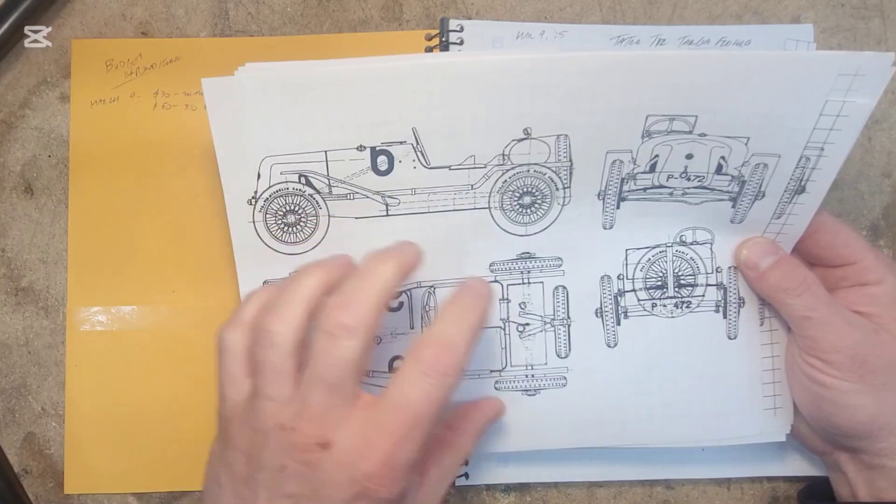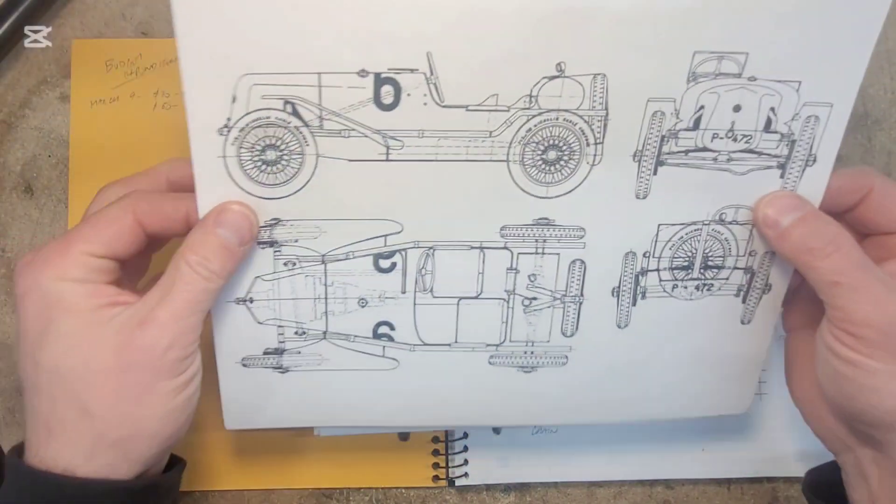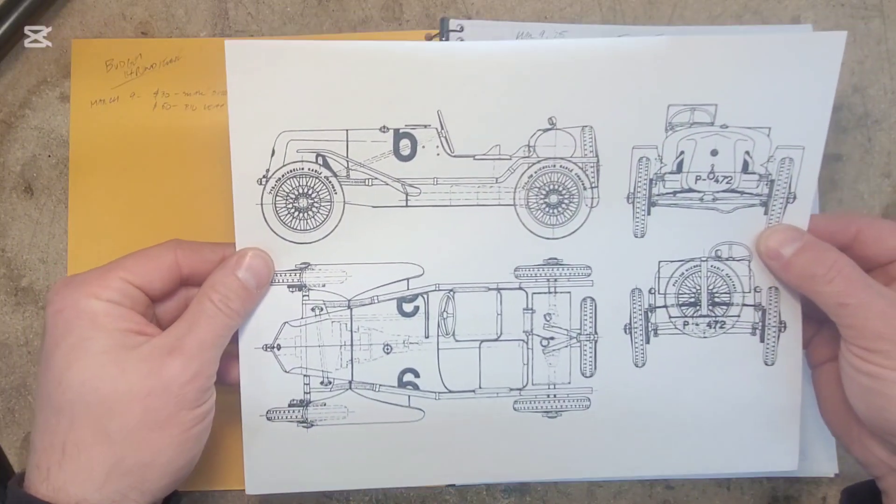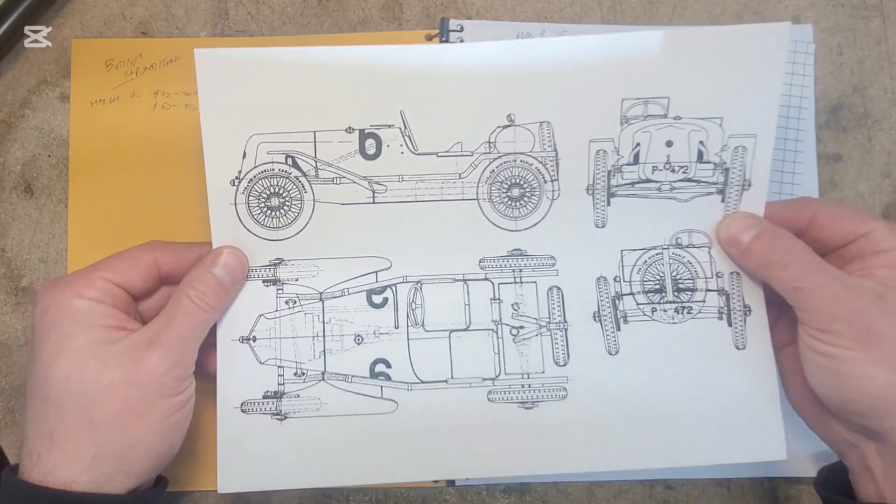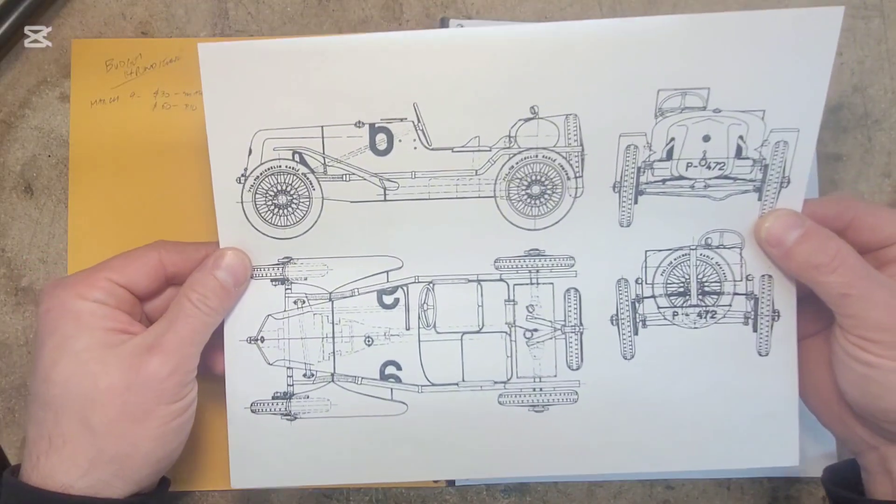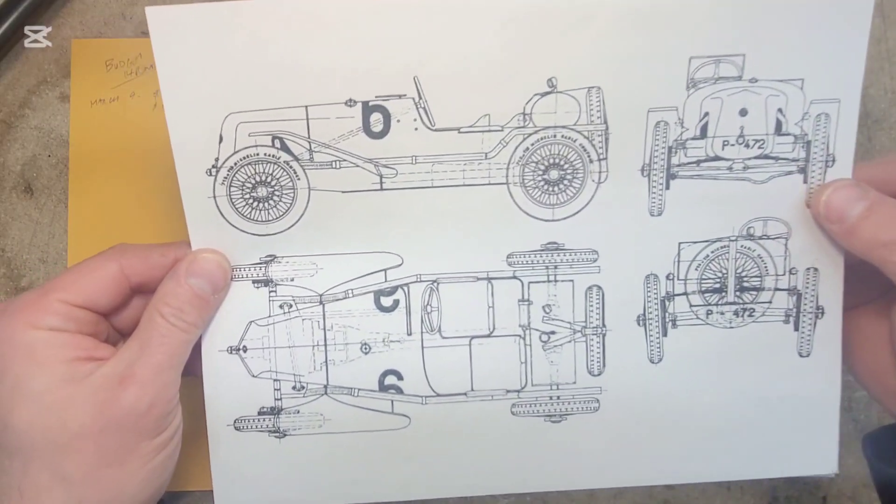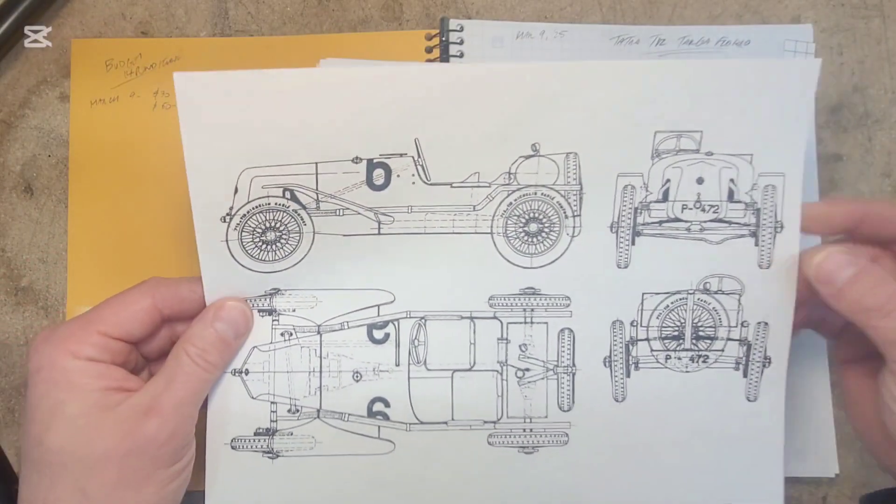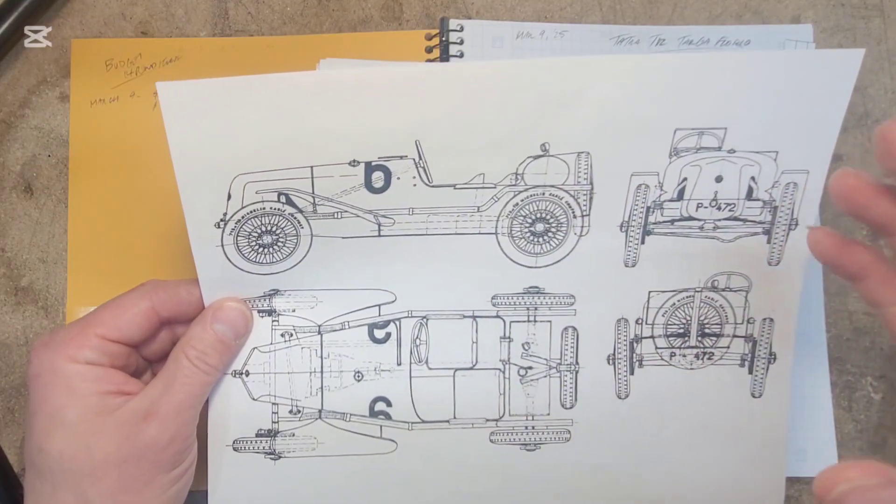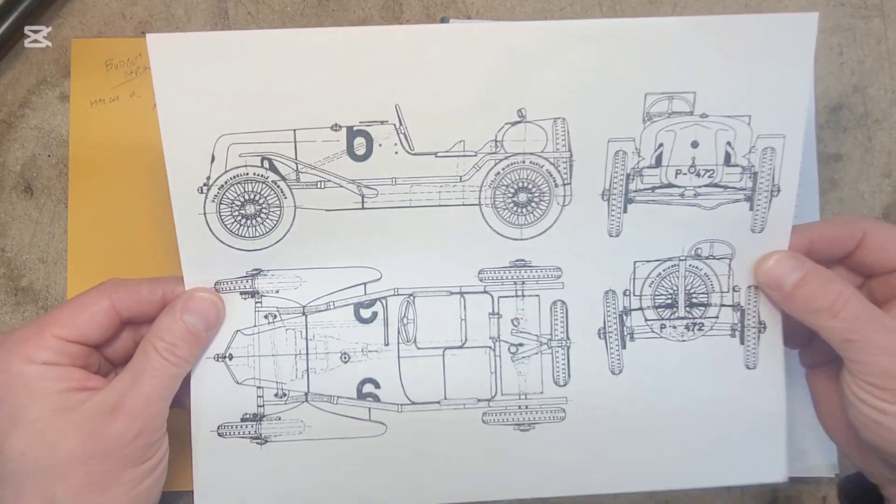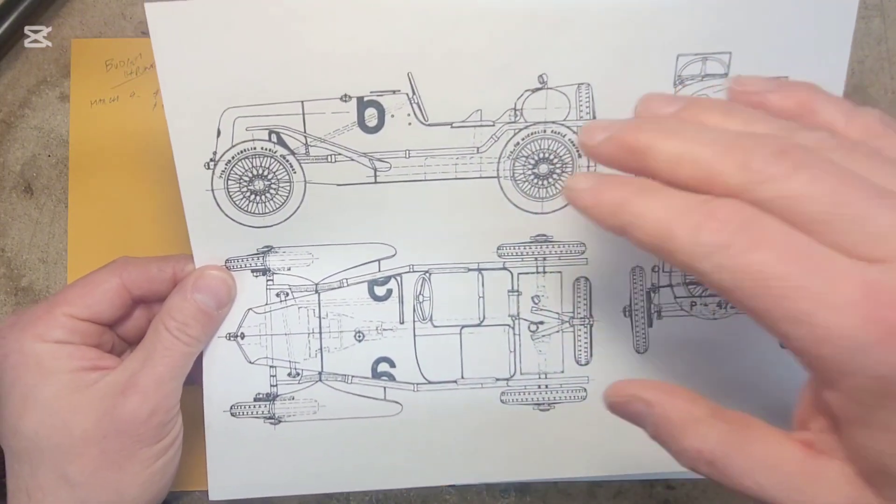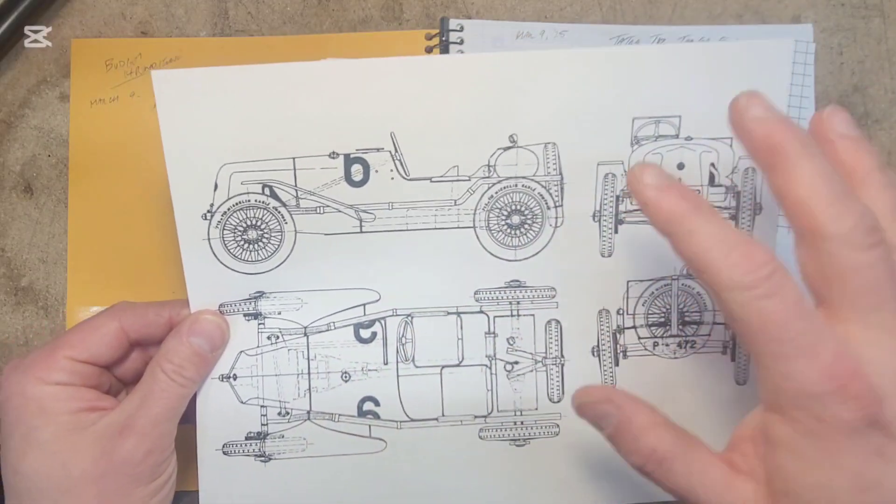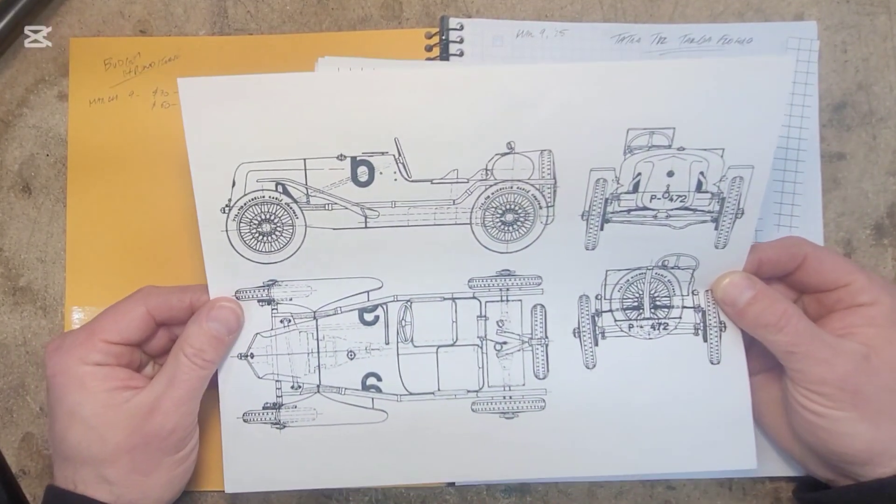So it starts with something like this. This is a schematic of the car I'm building next, the Tatra T12 Targa Florio, an excellent old race car. Almost no matter what car you're building, you can find something like this on the internet. It'll have essentially this layout: side view, top view, back view, front, and often it'll be aligned so that it's all in scale.